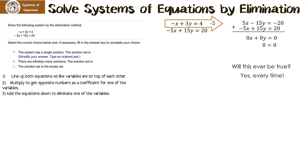So let's look at our possible solutions. We know it's not A because we don't have an ordered pair with x equal to something and y equal to something. Our two possible choices are B, there are infinitely many solutions, or C, the solution set is empty. In the last example we had 0 equal to a number, which could never be true. But in this case, 0 always equals 0, so that tells us there are infinitely many solutions.